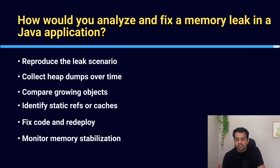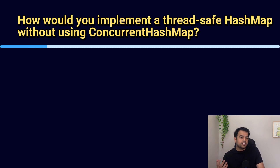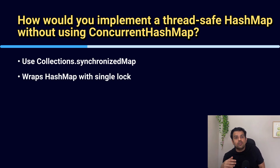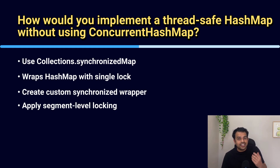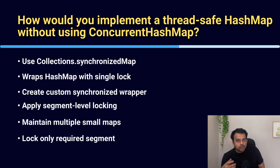How would you implement a thread-safe HashMap without using ConcurrentHashMap? One simple way is to use Collections.synchronizedMap, which wraps a normal HashMap and adds a lock around every operation. Another way is to use a custom wrapper with your own synchronized methods. You can also implement segment-level locking to reduce contention — internally you maintain multiple small maps and lock only the segment you need. This improves concurrency compared to full map locking.